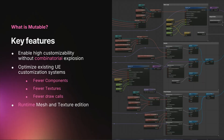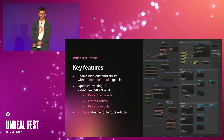With Mutable, you can create customizable systems and avoid the combinatorial explosion of manually making each part compatible with all the others. For example, when you create a new jacket, you don't need to make it fit with all existing shirts — you leverage Mutable to make it fit.